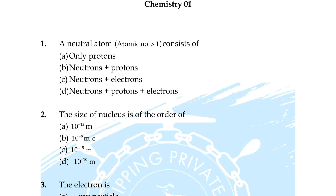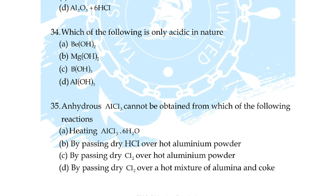Question number 32: in the case of alkali metals, the covalent character decreases in order — correct answer is option D. Question number 33: aluminum chloride exists as a dimer Al₂Cl₆ in solid state as well as in solution of non-polar solvents such as benzene; when dissolved in water it gives — correct answer is option B.